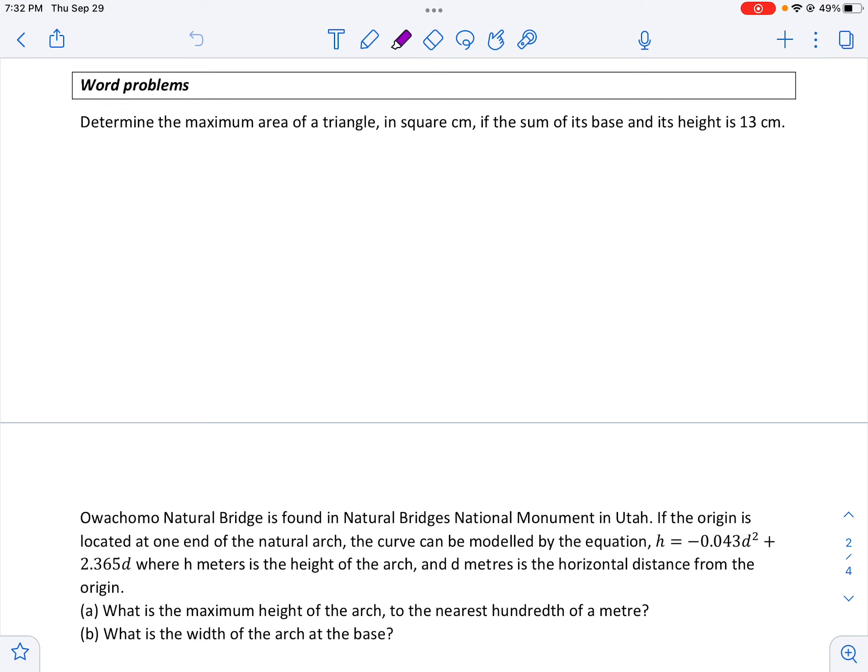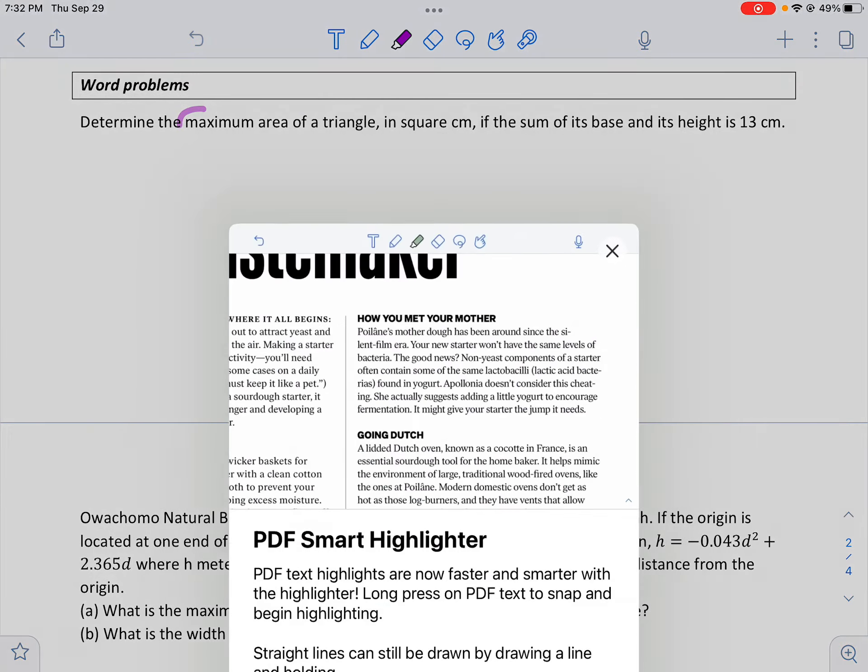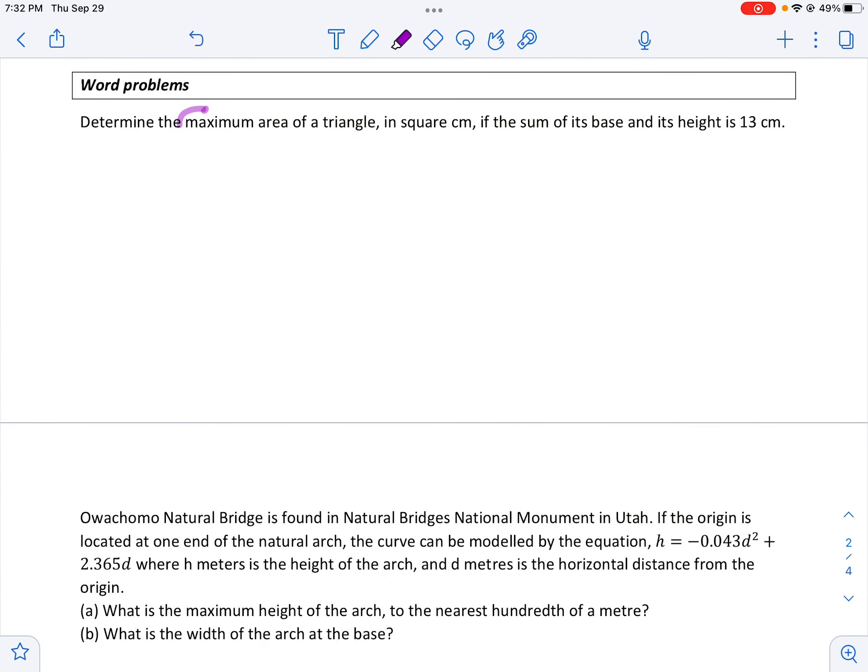All right, so when I'm seeing a problem like this, I want to look for what is it asking me? It's asking me for the max area. And what else, what other information do I know? I know it's a triangle. Well, so with that information, I know that the area of a triangle is base times height divided by two. And I'm looking for that to be a maximum. And as soon as I see the word maximum, I know I'm probably looking for the vertex.